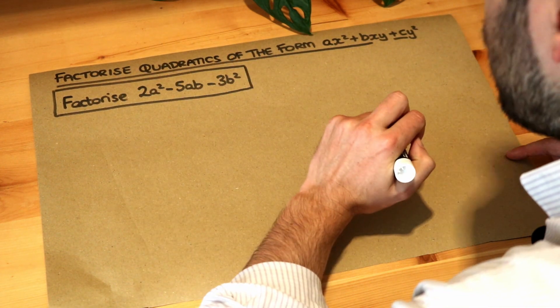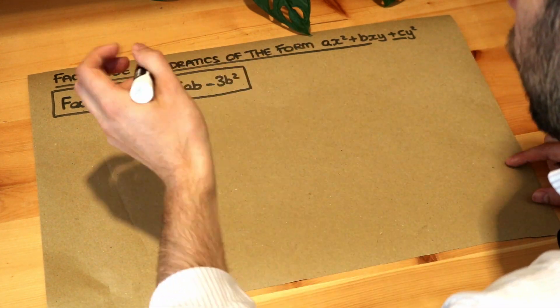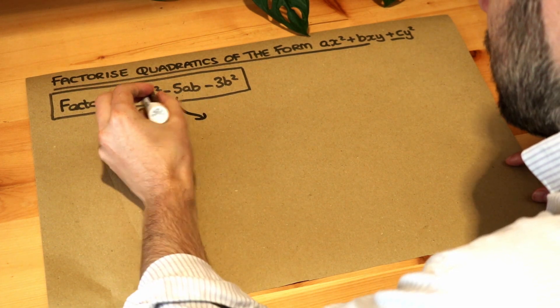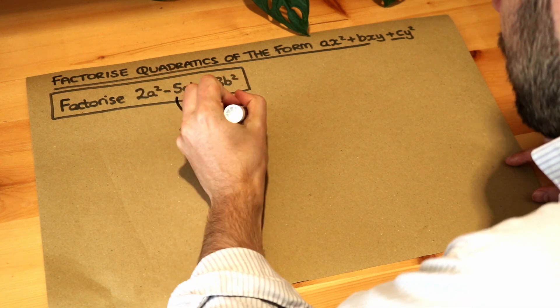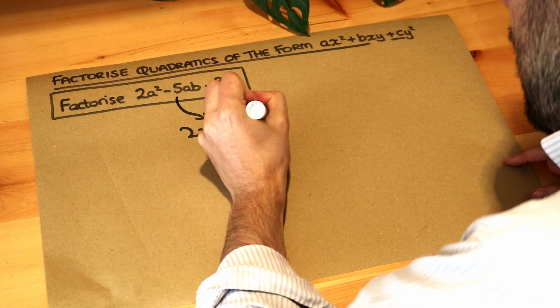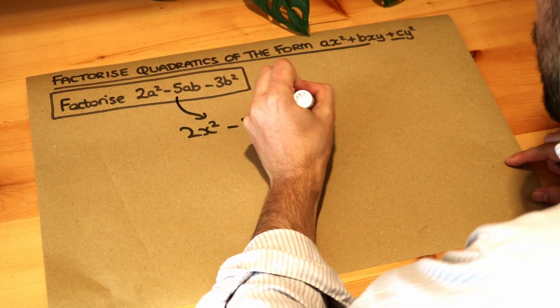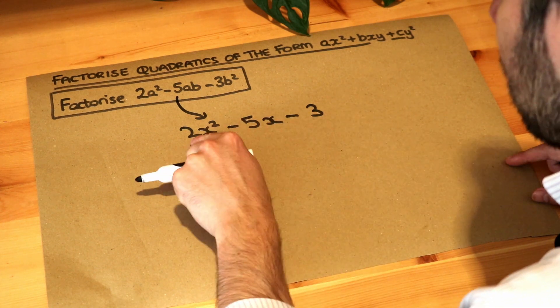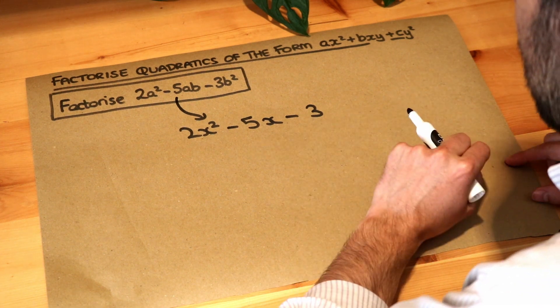When you have it in this form, one way of doing this is to just rewrite it as a kind of normal quadratic. So with this, if we wrote it as 2x squared minus 5x minus 3, without any variable at all, this looks more like a conventional quadratic - something x squared plus or minus something x plus a constant, a term without the x.